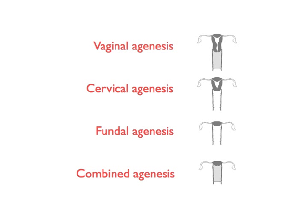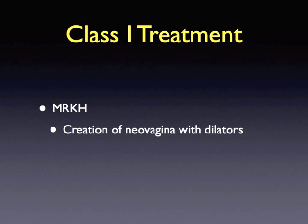In uterine hypoplasia, the endometrial cavity is small, with an intercorneal distance of less than 2 centimeters. Treatment of Meyer-Rokitansky-Küster-Hauser syndrome centers on correction of anatomical anomalies. A neovagina is created most often using vaginal dilators. The patient is instructed to apply pressure to the vaginal dimple twice daily for 20 to 30 minutes using graduated vaginal dilators. Average time for use of the dilators is about 12 months. This procedure is successful in creating a neovagina in more than 90% of patients.